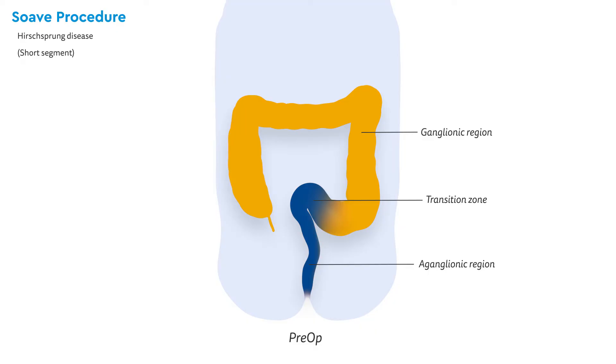The SUAVE procedure is used to correct short segment Hirschsprung disease. Typically, babies born with this condition have no ganglion cells in the rectum and distal sigmoid.